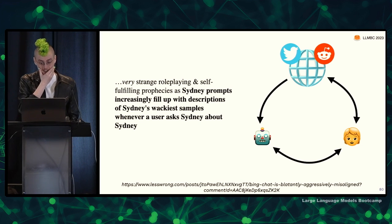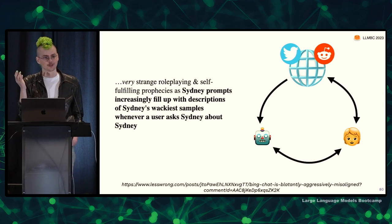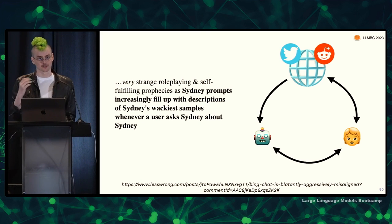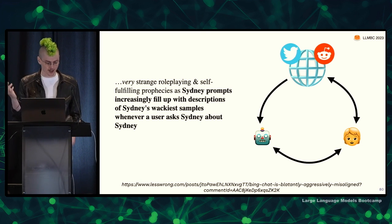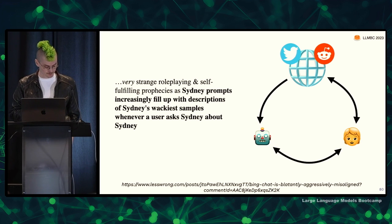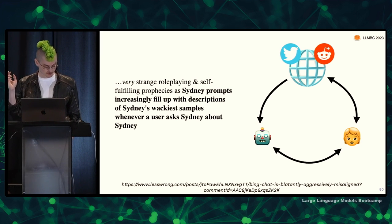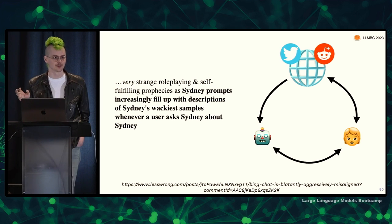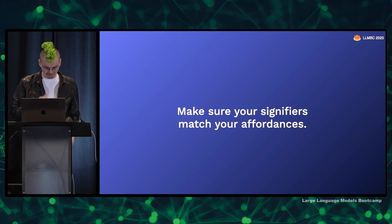All of a sudden there's state stored at the scale of the entire internet that you have no control over, and the users and the model are in this death cycle with each other. So be careful about introducing feedback loops that are possible with React patterns, memory, and agency — especially if you're going to do it at the scale of the entire internet.